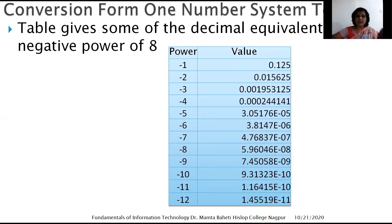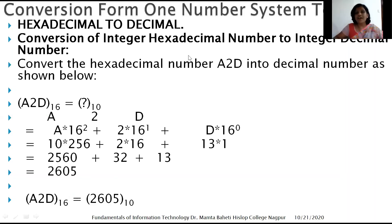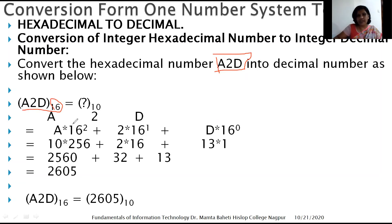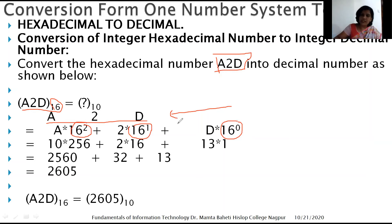Using the tables makes things very easy and you can get very accurate results. Now we will see how to convert an integer hexadecimal number into an integer decimal number. Take the example A2D in hexadecimal. Separate out the digits, then from right to left assign 16⁰, 16¹, and 16² to each digit — we use base 16 because that is the base of the hexadecimal number system.